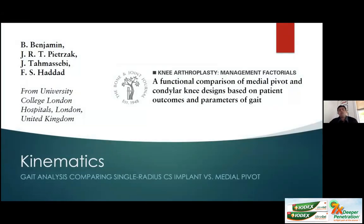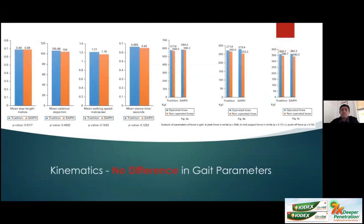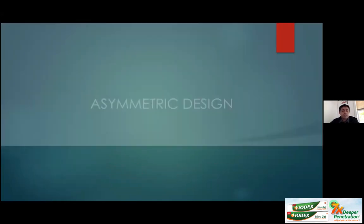Professor Haddad in England performed gait analysis comparing single radius cruciate substituting designs with a medial pivot implant and found absolutely no difference in various gait parameters. In terms of gait and function, medial pivot designs do not appear to offer any functional benefit to patients.